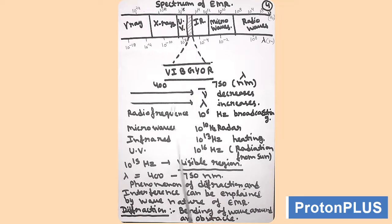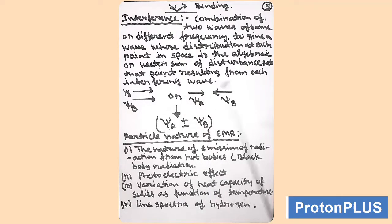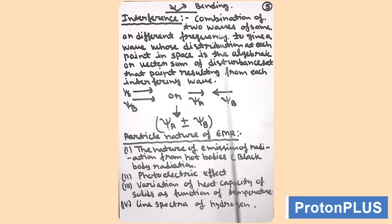The visible zone is at 10¹⁵ Hz. The phenomena of diffraction and interference can be explained on the basis of the wave nature of electromagnetic radiation. Diffraction is the bending of a wave around an obstacle. Next is interference — interference is the combination of two waves of same or different frequency, same or different direction, to give a wave whose disturbance at each point in space is the algebraic or vector sum of the disturbances at that point resulting from each interfering wave.